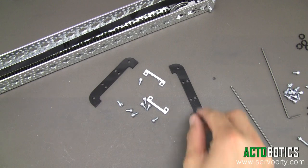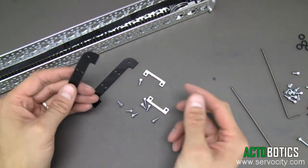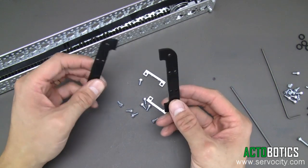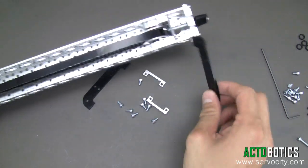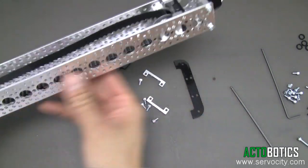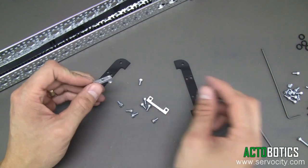Step number three in assembling the channel slider kit is actually attaching the feet. As you can see here, we've got two feet here of black acetoplastic. They can actually be attached along any length of the channel, but we're going to go ahead and attach them to the end here. Very simple part to attach.